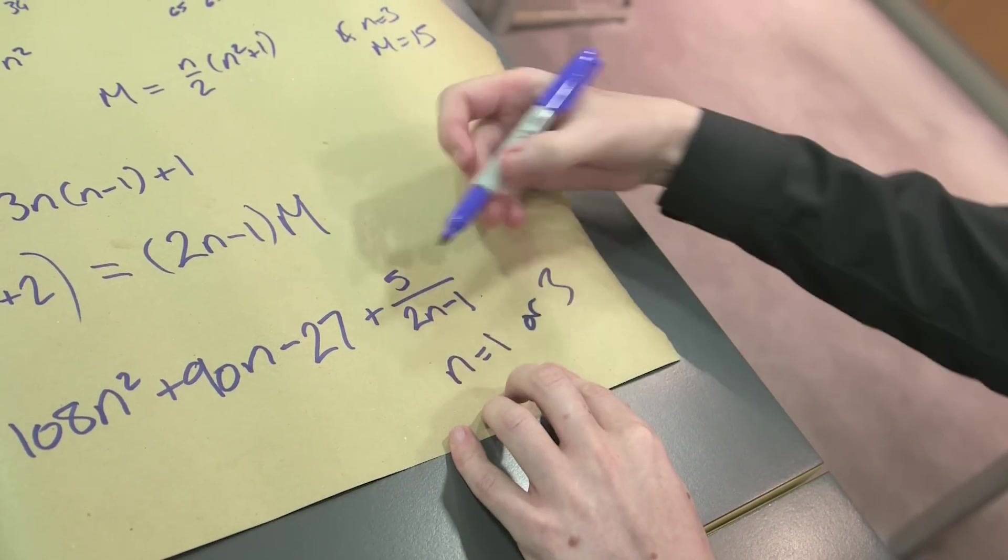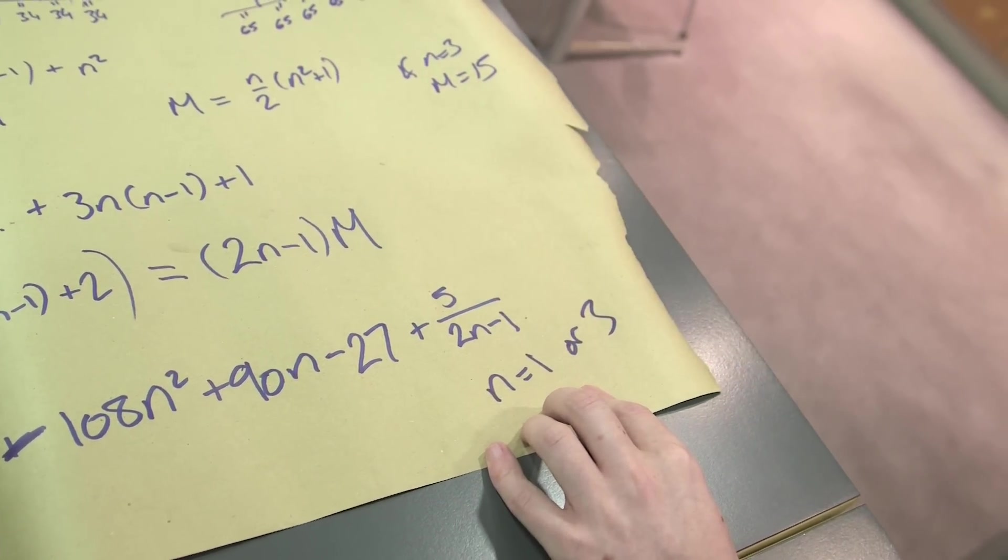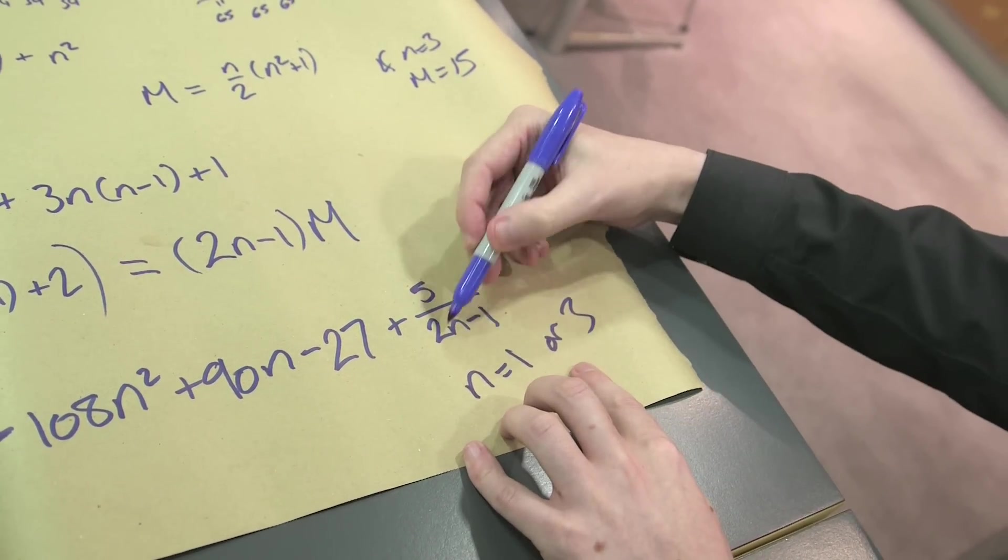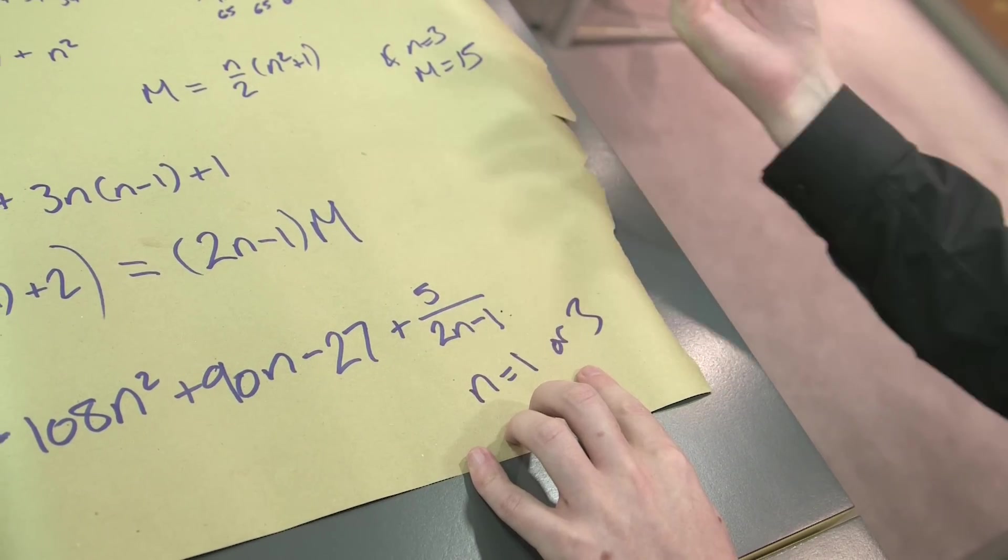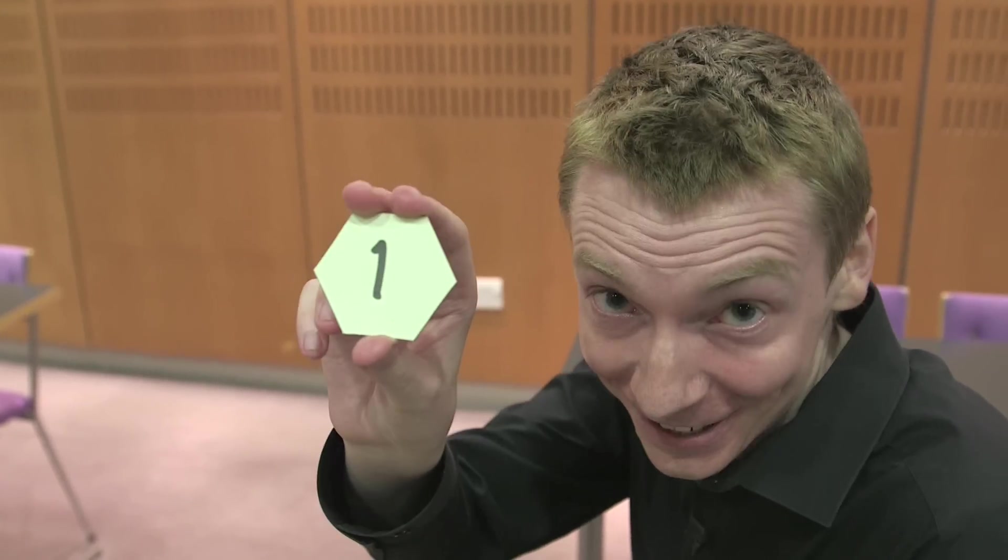It has to be n equals 1 or n equals 3. When n equals 1, you've got 5 divided by 1, which is a whole number. And when n equals 3, you've got 5 divided by 6 minus 1. So 5 divided by 5 is equal to 1. And that's the only size magic hexagon you can have. So n equals 1. I didn't mention that. I kind of was a bit sneaky about that. So if you want to know the magic hexagon of size 1, there it is.